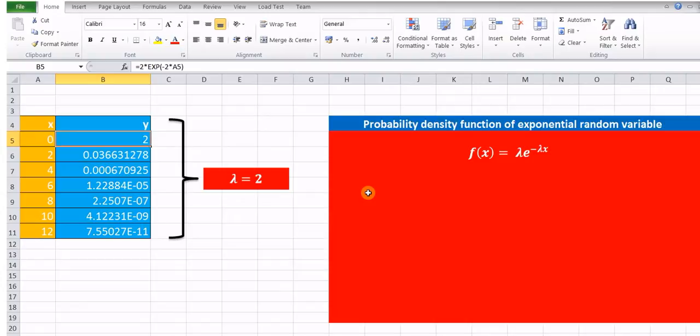So, the exponential random variable is x and here the probability density function is given by f(x) equals lambda e raised to minus lambda x. So, let us assume that this is nothing but y equals f(x) equals lambda e raised to minus lambda x.